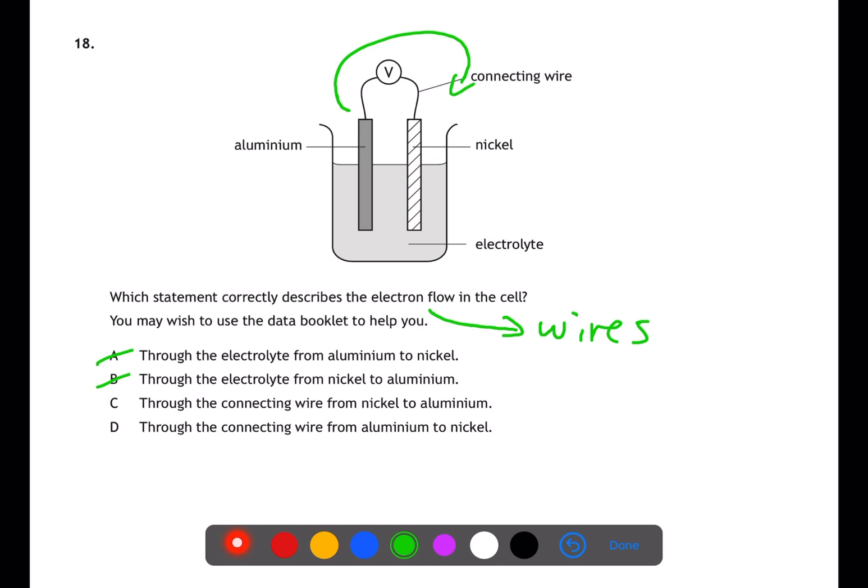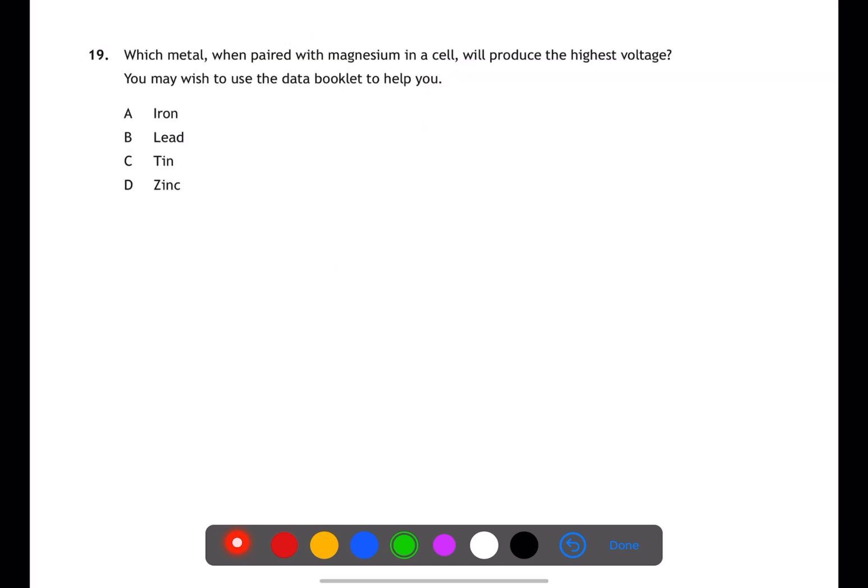For question 19, you want to use page 10 of the data book. You want to find the metal which is furthest away in reactivity from magnesium. In this case, that is B, lead.